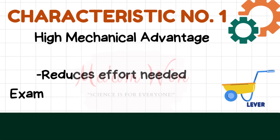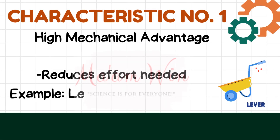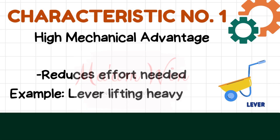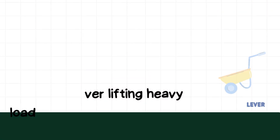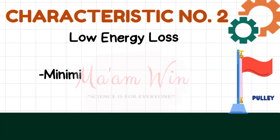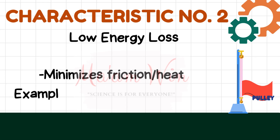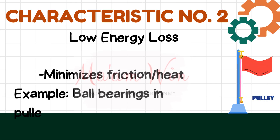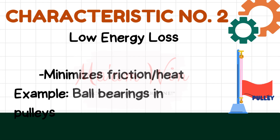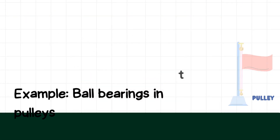Let's start our discussion with the characteristics of efficient simple and compound machines. Characteristic number 1: High mechanical advantage — it reduces the effort needed. Example: lever lifting a heavy load. Characteristic number 2: Low energy loss — it minimizes friction or heat. Example: ball bearings in pulleys.